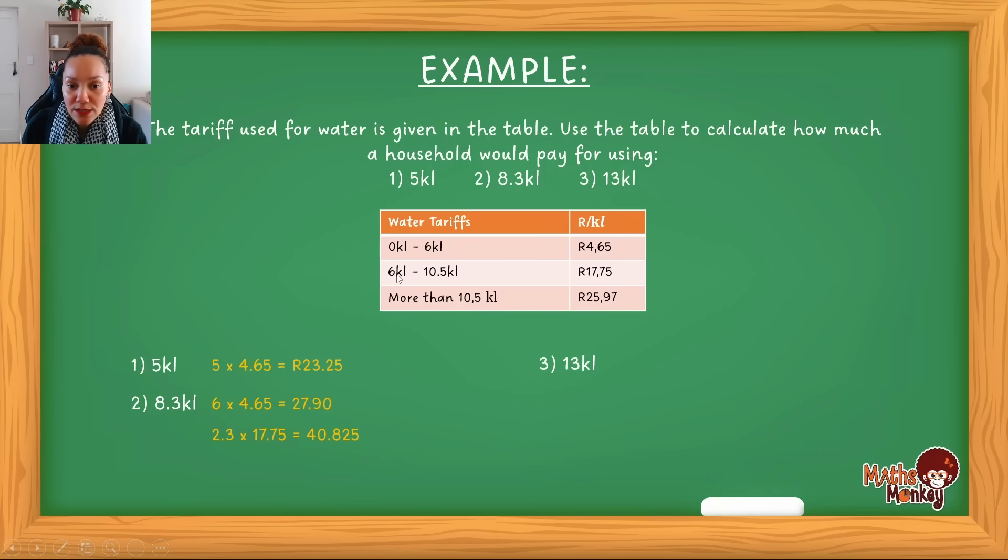Note usually this will say more than 6 kiloliters. Because I know people will ask, oh but if it's 6 kiloliters, there's a 6 there and there's a 6 there. In this case, or in your exam, they will always say more than. So then you know that 6 will then fall in this interval and then more than 6 will fall in this interval. So then to find out the total amount, it will then be the first 6 plus the 2.3 and then together, that will be what this household will be charged, which is 68 rand and 73 cents.